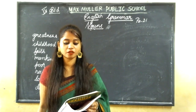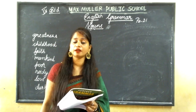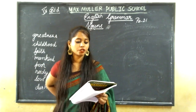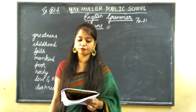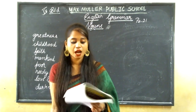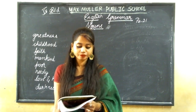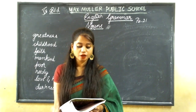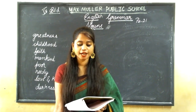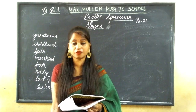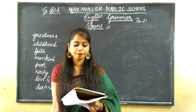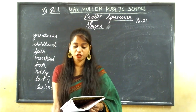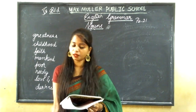Countable nouns have both singular and plural forms. Articles A and AN are used with singular countable nouns. The quantifiers a few, many, lots of, and some are used with plural countable nouns. Uncountable nouns do not have both singular and plural forms — we do not use A or AN with them. The quantifiers a little, much, some, and a lot of go with uncountable nouns.